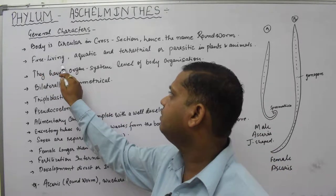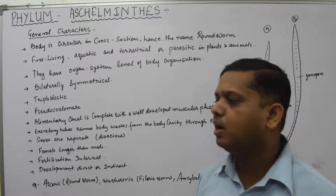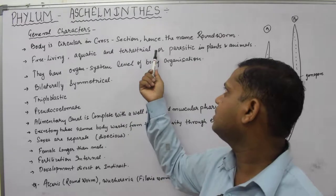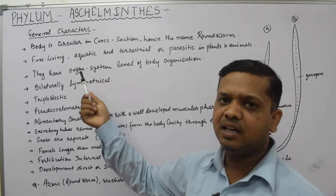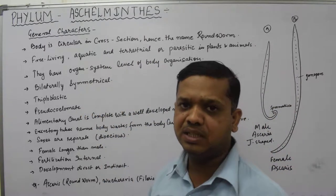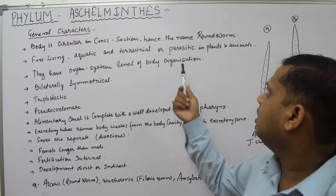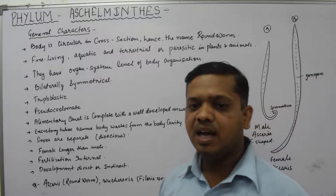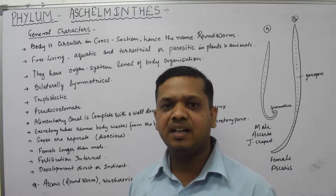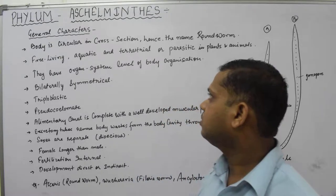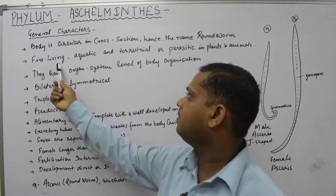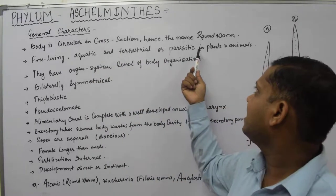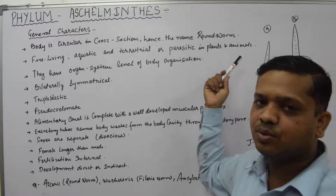The second important feature is that they are free-living, found in aquatic conditions in water bodies and terrestrial conditions on land, whether it is food material or soil. They are also parasitic in plants and animals — they act as parasites found inside the body of plants as well as animals. So they are aquatic, terrestrial, or parasitic in plants and animals.